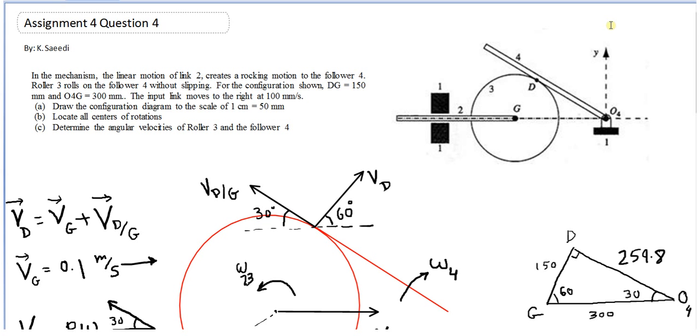First of all, I'm drawing the triangle GDO4. The distance between G and O4 is 300. GD is 150. At D we have a right angle because member 4 is tangent to the disc, so the rest of the angles are 30 and 60 degrees. Consequently, the line O4D is 259.8 millimeter. That's from the geometry.